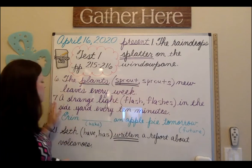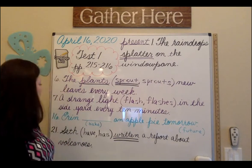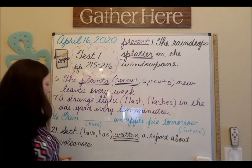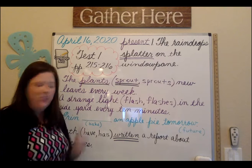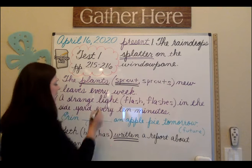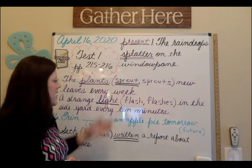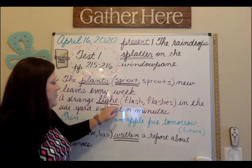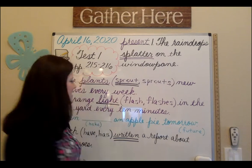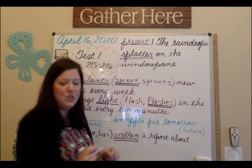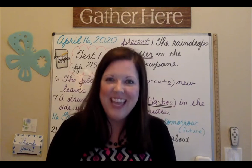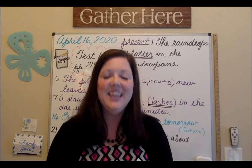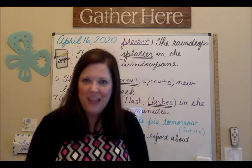Let's look at number seven. Number seven says: a strange light flash or flashes in the side yard every 10 minutes. Who or what is the entire sentence about? Well, some of you might say 'strange,' but strange is not the item that is doing the flashing — it's actually the light. Light is our subject. Now let's ask if we have a singular or plural subject. We have a singular subject — just one light. Since we have a singular subject, we must have a singular verb. Singular verbs end in S. Let's underline 'flashes' two times. Remember, the regular verb 'flash' ends with SH, so we add ES — not just S, not just E. Flashes is the correct verb to underline two times.